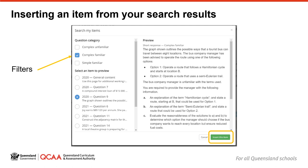I can select one, two, or all categories to see my banked questions, or if I untick each question category, it will show only the general content items. If I select just the Complex Familiar items, the matches are shown here, with a brief description of the items to help me locate the one I'm looking for. If I click on one of the options provided, the preview pane shows me the question. If this is the question I want, I click on Insert This Item, and it is copied to the assessment template. I can then edit the item if I need to, or keep it as it is.